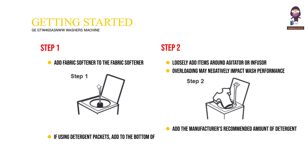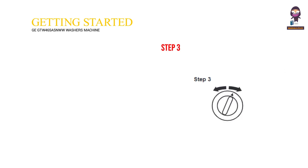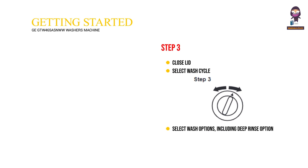Add the manufacturer's recommended amount of detergent to the top of the load after adding clothes. We recommend the use of high-efficiency detergents in your energy-efficient washer. Step 3: Close the lid. Select Wash Cycle. Select Wash Options, including the Deep Rinse option when using Fabric Softener. Select Options. Select Load Size.